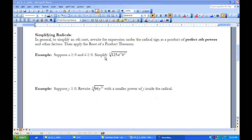This next section is about simplifying radicals. In general, to simplify an nth root, we rewrite the expression under the radical sign as a product of perfect nth powers and other factors. Then we can apply the root of a product theorem.